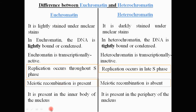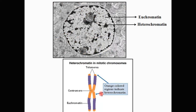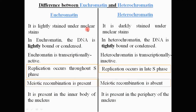Euchromatin is present in the inner body of the nucleus, whereas heterochromatin is present at the periphery of the nucleus. You can clearly see that the darkly stained regions are at the periphery and the lightly stained regions are in the inner body of the nucleus.